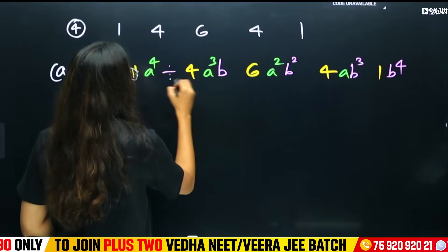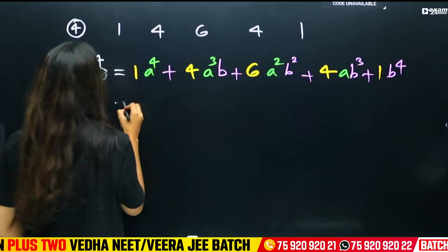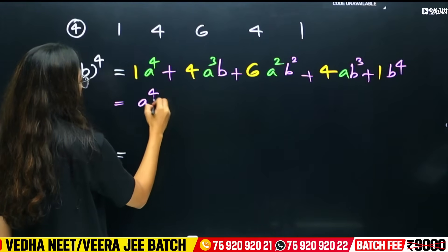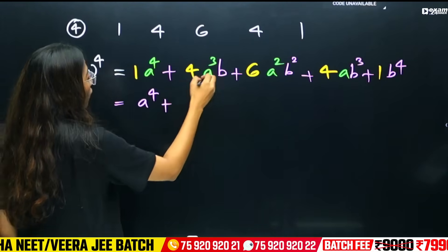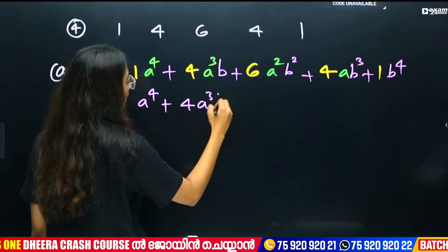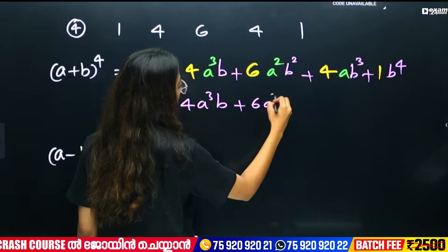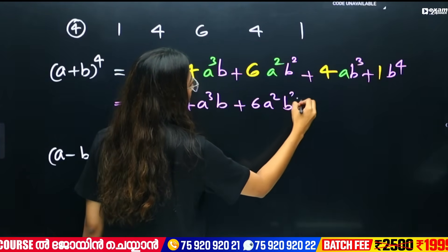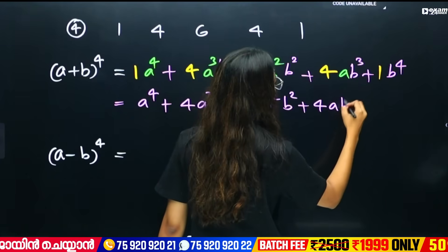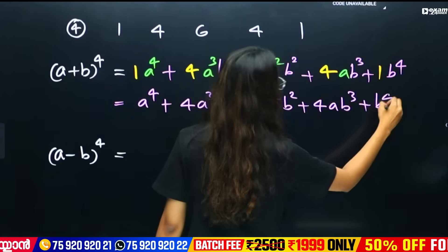We get a raised to 4 plus 4a cubed b plus 6a squared b squared plus 4ab cubed plus b raised to 4.